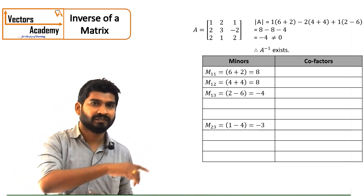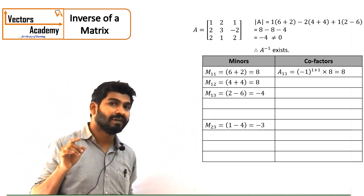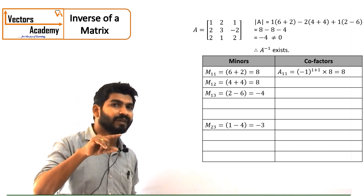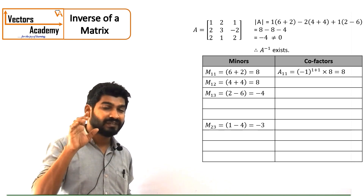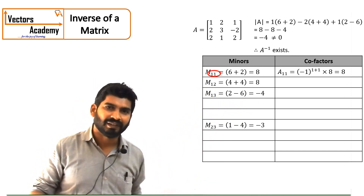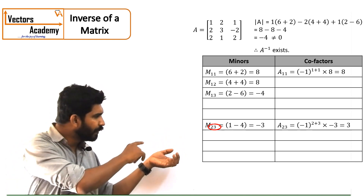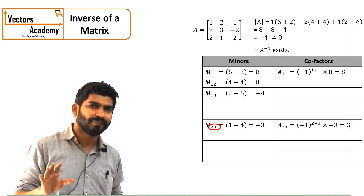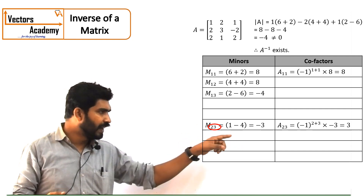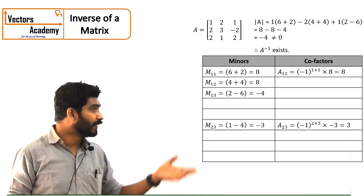Now let us see how to find the cofactors. For the first cofactor, it is indicated by capital A11. If I have to find A11, the row and column which we omitted were the first row and the first column. So 1 plus 1 is an even number. If it is an even number, I keep the cofactor the same as the minor. So the minor is 8 and the cofactor is 8 as well. Now if I consider element M23, 2 plus 3 gives you 5, which is an odd number. If it is an odd number, I change the sign of the minor for the cofactor. So the cofactor comes out to be minus of minus 3, which is 3.